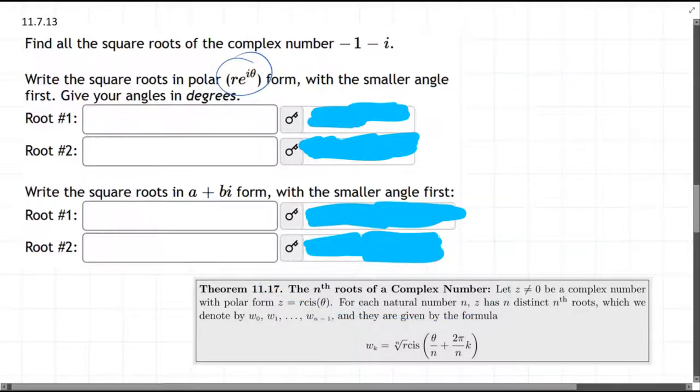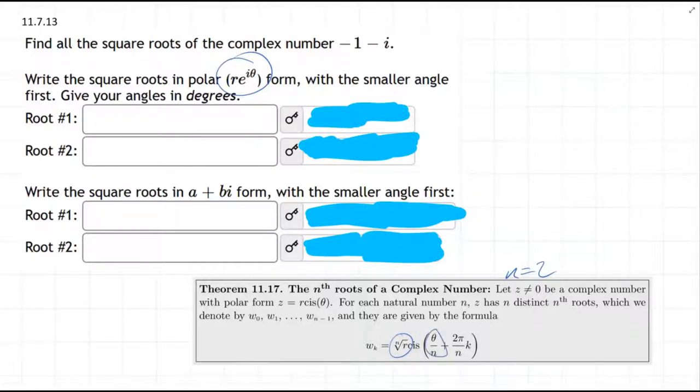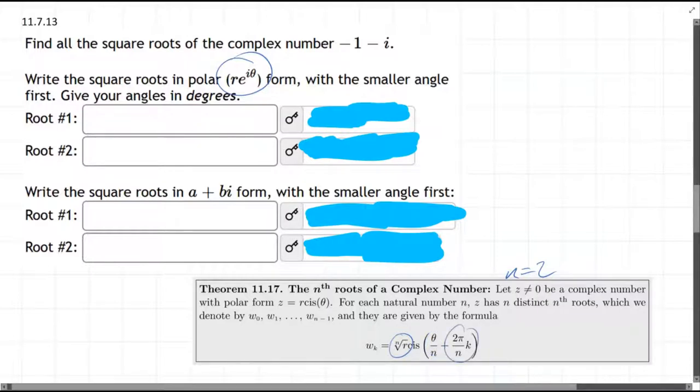So first thing we need to do is get the theta and the r. We're taking the second root, the square root, so our n will equal two, and we're going to get the square root of the radius. And then for the angle, we're going to divide the angle by two, and then we're also going to add this extra piece right here.